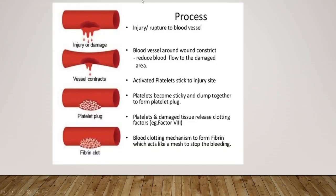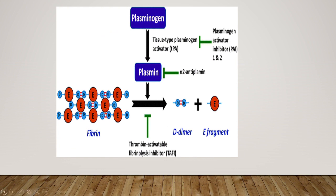Before we look at the D-dimer test, we need to understand what D-dimer actually is. In our body, when an injury occurs, blood vessels are damaged. Platelets attach to form a plug, and then a mesh of fibrin is laid down to form a clot, stopping the blood flow. After the clot forms and the bleeding stops, the body breaks down that fibrin clot. The protein produced when fibrin clot is broken down is called D-dimer.